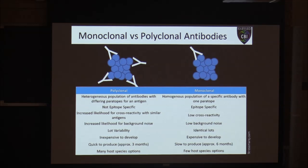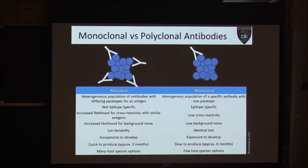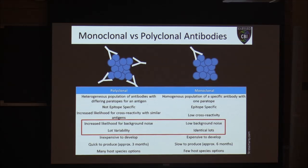This table highlights many differences between polyclonal and monoclonal antibodies. Polyclonals are by far more popular and more commonly found in online catalogs. The number one reason is cost — they're inexpensive to develop and quick to produce, taking only about three months to make. They can also be produced in a number of different host species. However, with polyclonal antibodies there's an increased likelihood for background noise and a huge variability from lot to lot.